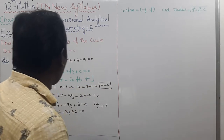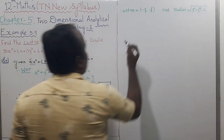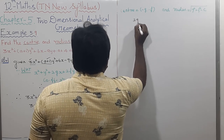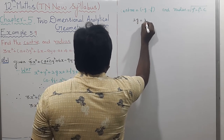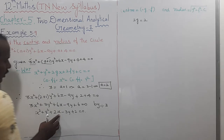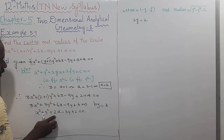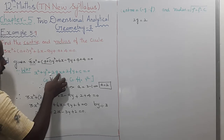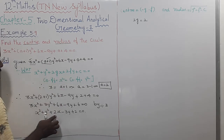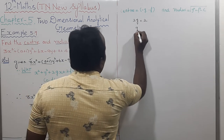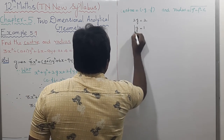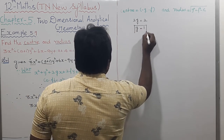First, find the value of g. The coefficient of x: 2g = 2, therefore g = 1.